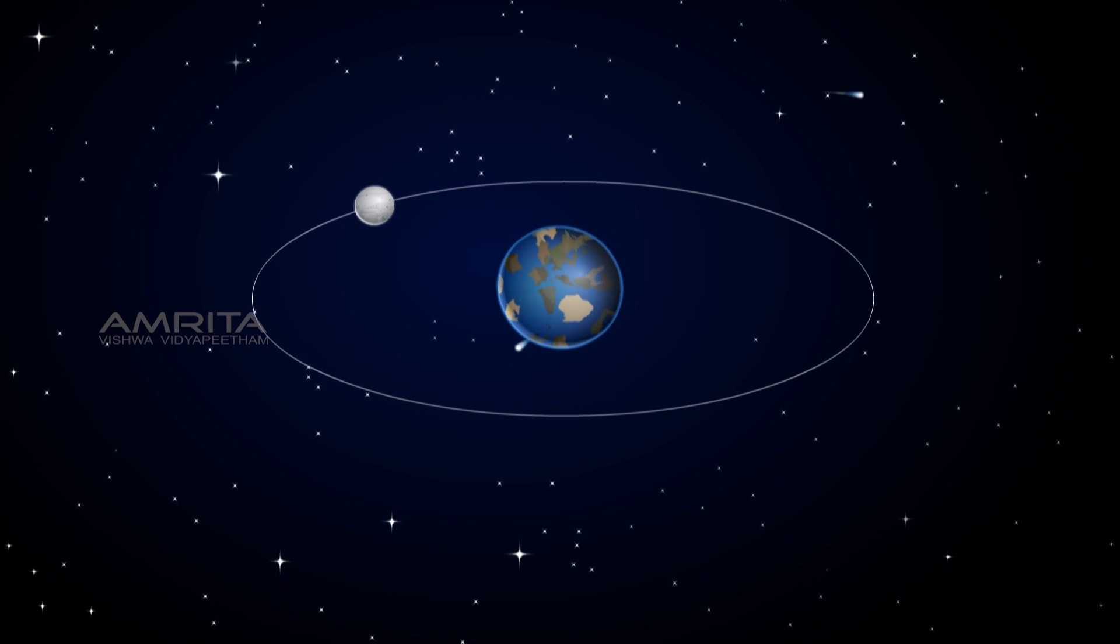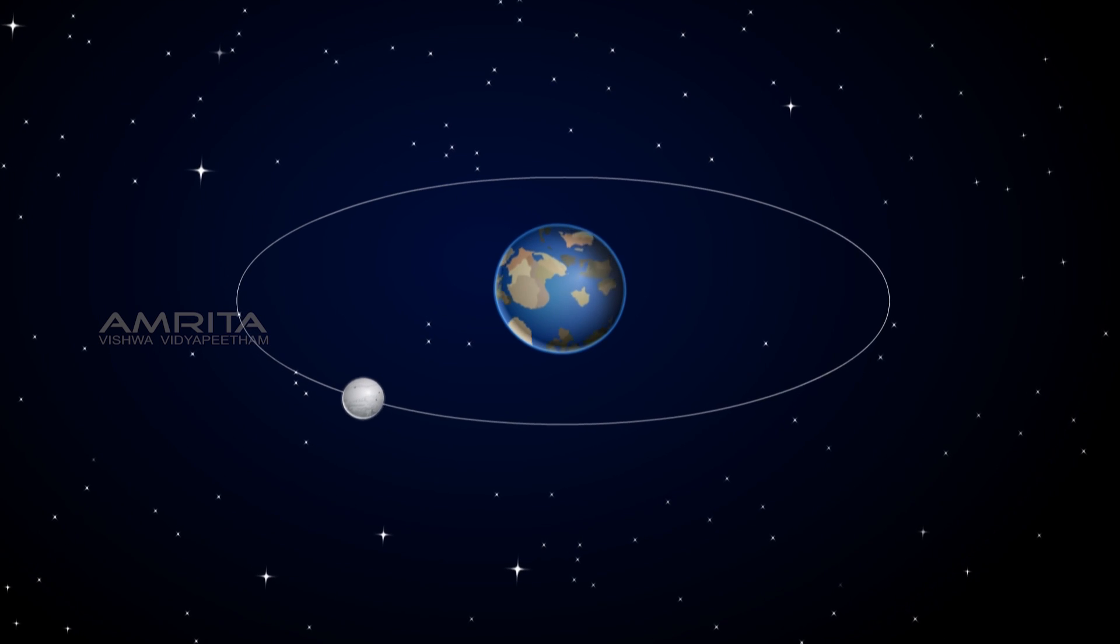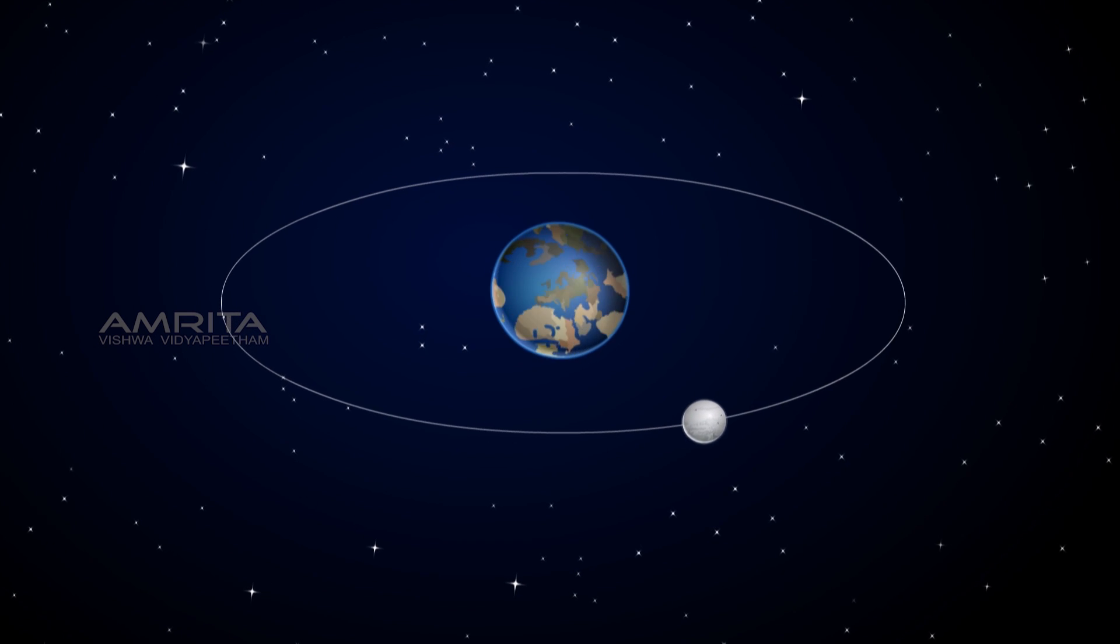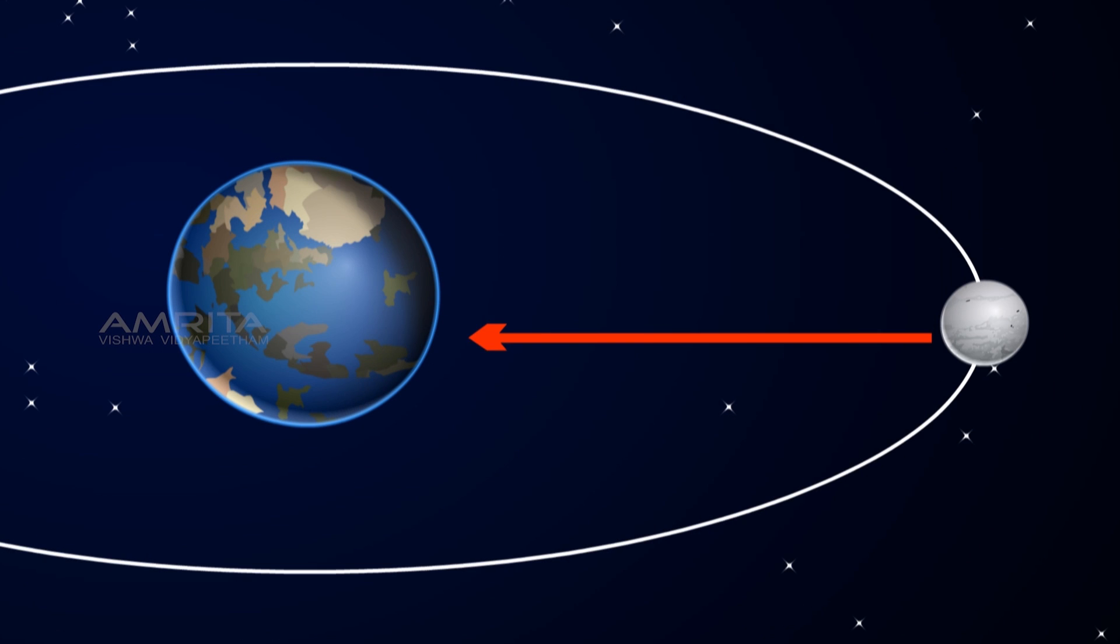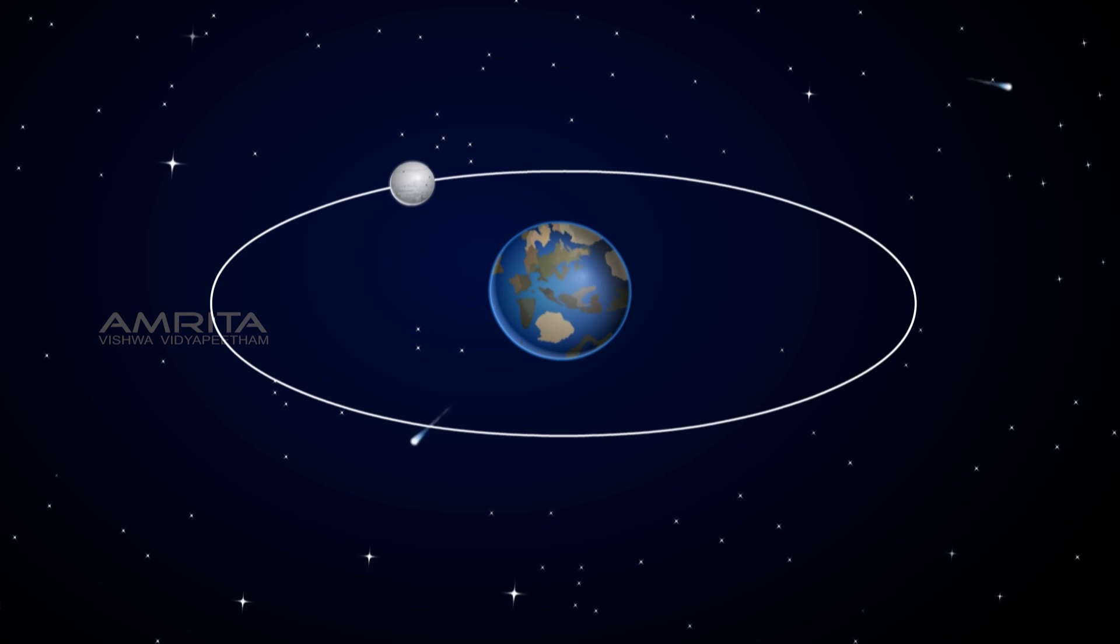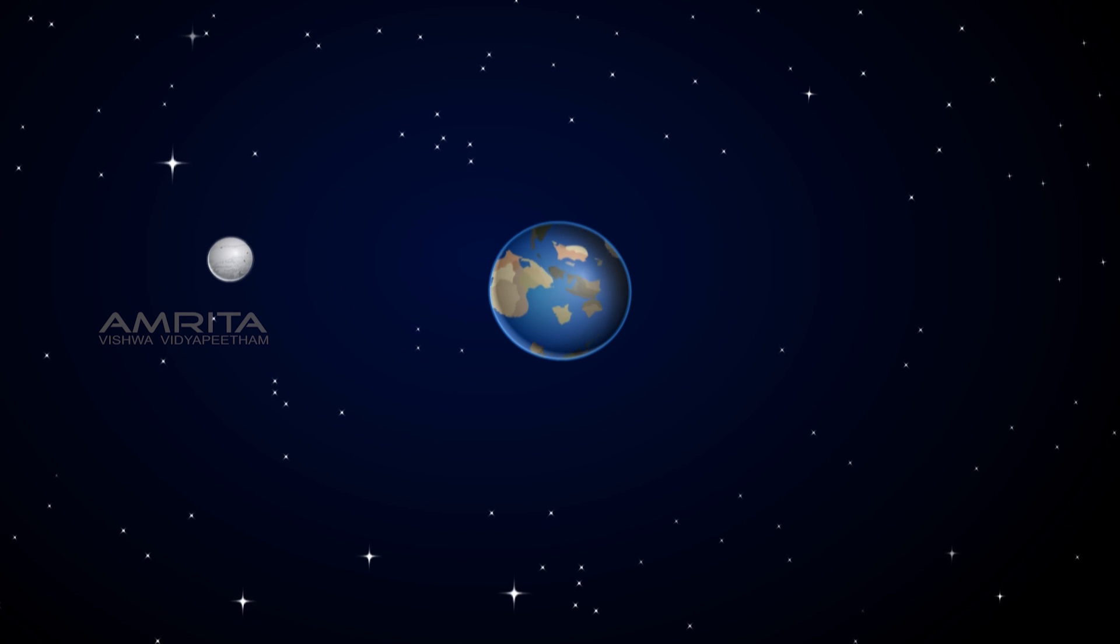The motion of the moon around the earth is due to this centripetal force. The centripetal force is provided by the gravitational force of attraction of the earth. If there was no such force, the moon would pursue a uniform straight line motion.